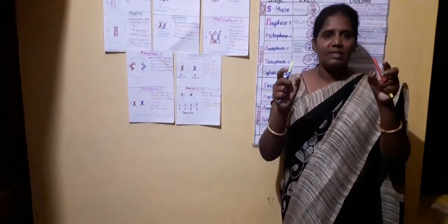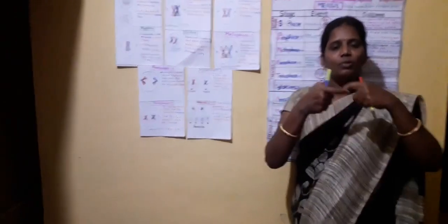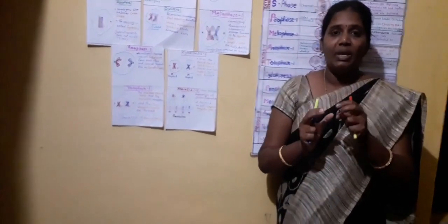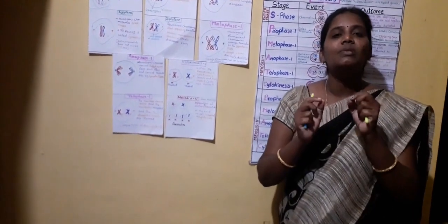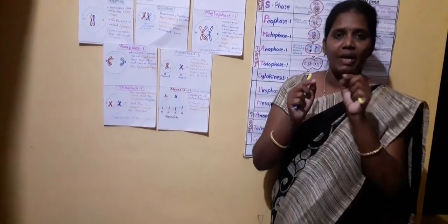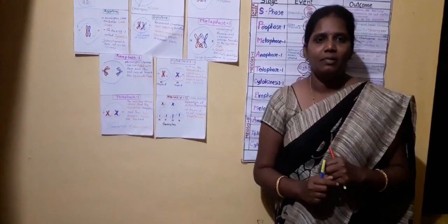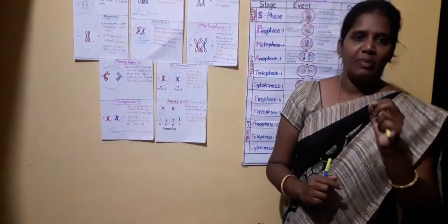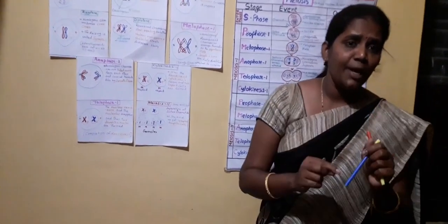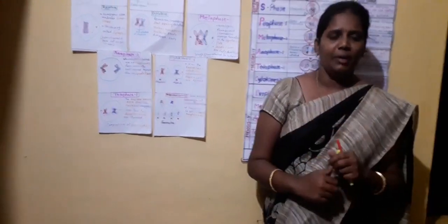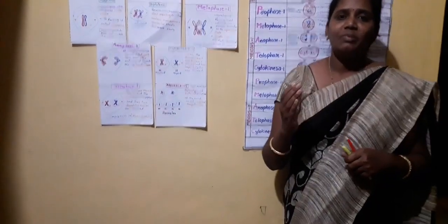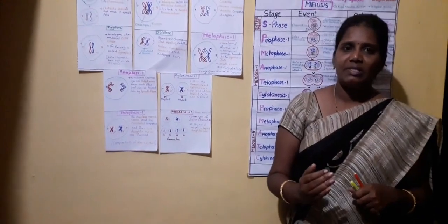When sperm and ovum fuse together, the zygote is formed. That will be in diploid state, meaning it will have two sets of chromosomes, represented as 2N. So zygote is represented with 2N. Later, the zygote will be developed into a baby. Sperm cell and ovum cell are in haploid state, and zygote is in diploid state, represented with 2N.